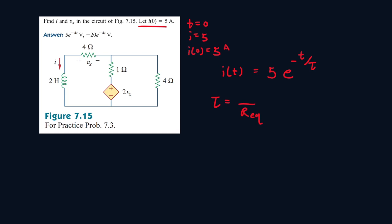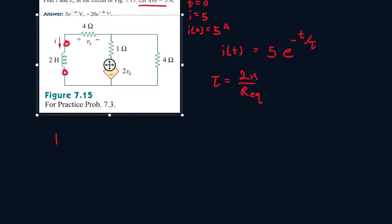So the inductance value is 2 henrys. Now the resistance equivalent will be the resistance equivalent between the inductance value. So let's redraw the circuit.